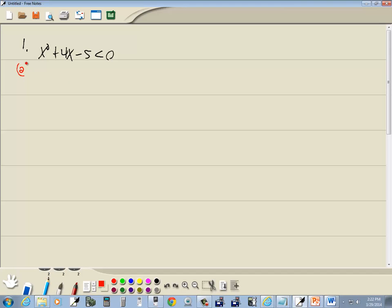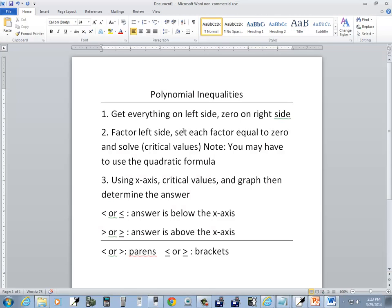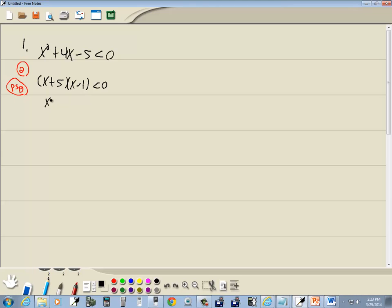Step two is to factor our left side. This factors using the PST method if you took algebra with me. So this factors as x plus 5 times x minus 1, less than zero. Then it says set each factor equal to zero and solve. So we'll set the x plus 5 equal to zero. Then we'll set the x minus 1 equal to zero. So we've got x is equal to negative 5 and x is equal to positive 1. And those are our critical values.